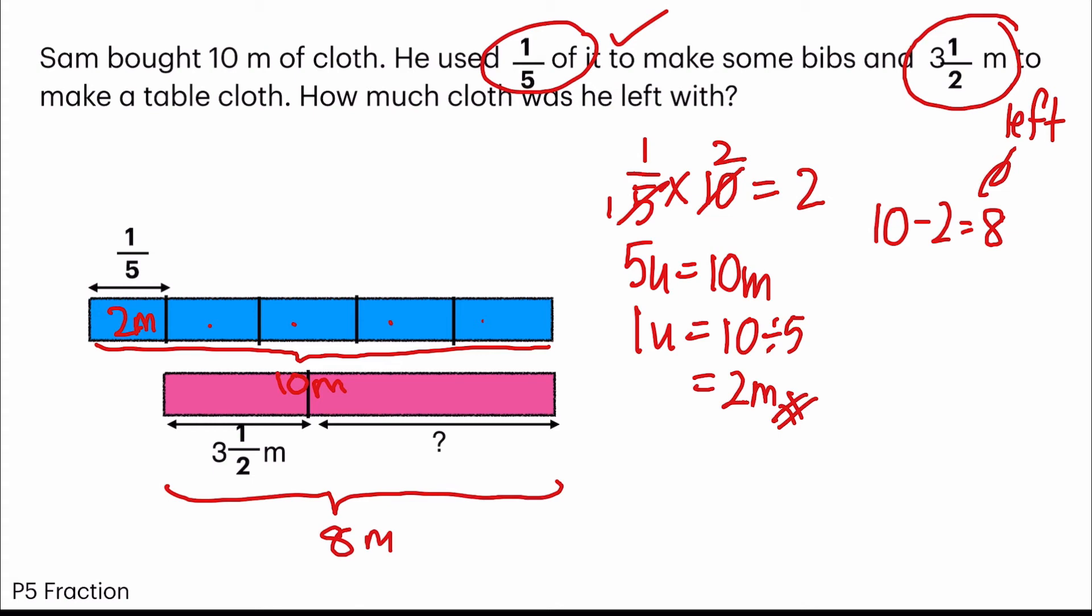So the next step would be subtracting. Eight minus three and a half. And I will get four and a half meters. And that's my final answer. Four and a half meters of cloth left.